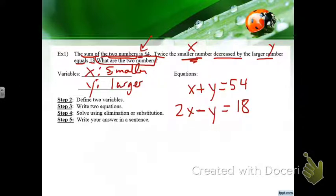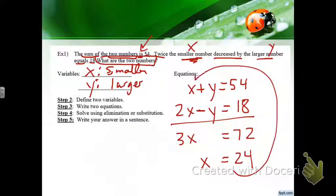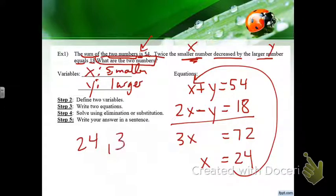This is lined up perfectly for elimination. Add the equations: 3X equals 72, divide by 3, X equals 24. Plug back in: 24 plus some number equals 54, that number has to be 30. So my two numbers are 24 and 30.